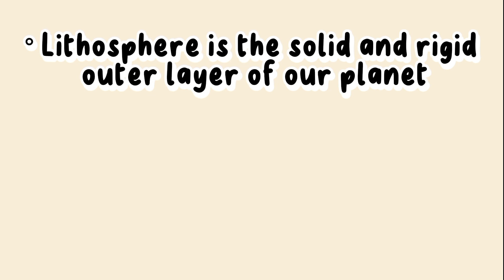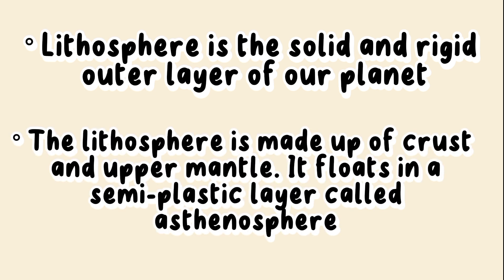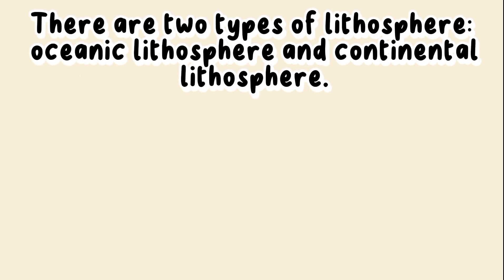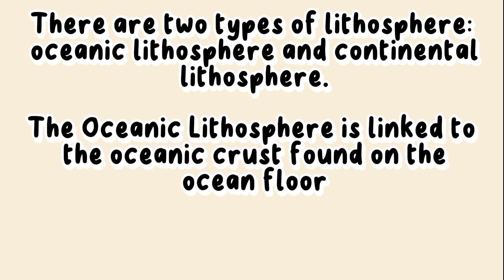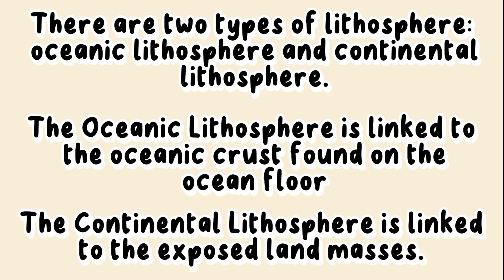Now let's have a small recap. The lithosphere is a solid and rigid outer layer of our planet. It is made up of crust and upper mantle, and it floats in a semi-plastic layer called the asthenosphere. There are two types of lithosphere: the oceanic lithosphere, linked to the oceanic crust found on the ocean floor, and the continental lithosphere, linked to the exposed land masses.